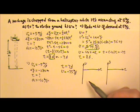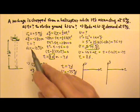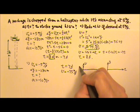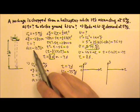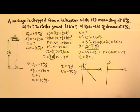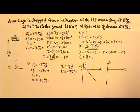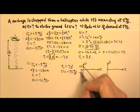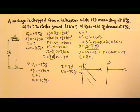Before we finish, let's plot some graphs. For the velocity versus time graph: when the helicopter was ascending, the initial velocity is positive 5, and the slope — which is the acceleration — is negative 10, giving a constant negative slope. If the helicopter was descending, the velocity starts at negative 5 with the same slope.